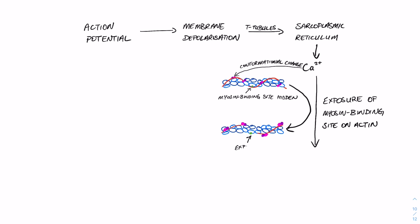So without calcium, the myosin binding site on actin is hidden, whereas when calcium binds troponin, that causes a shift whereby we can expose that binding site.